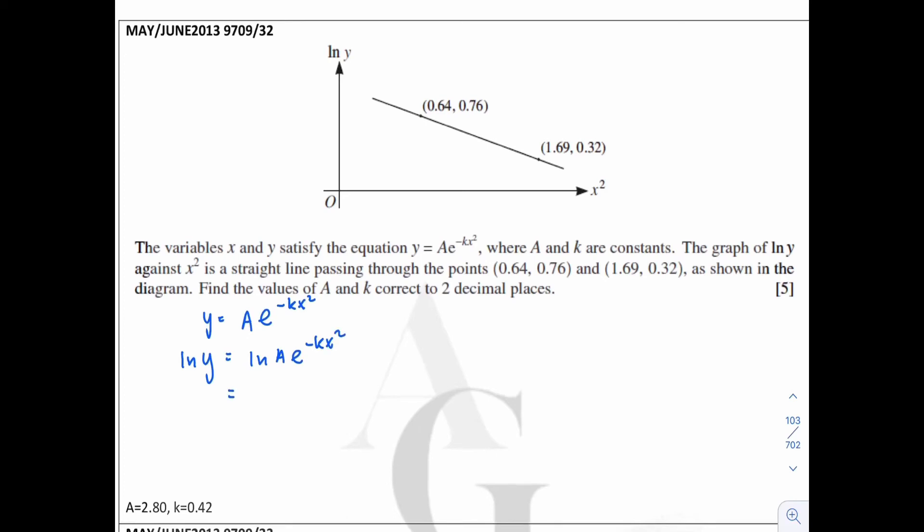And then we should separate the right-hand side into two terms. ln a plus ln e power negative kx squared. And for the power, can bring down. So it becomes minus kx squared ln e. And ln e is actually equal to 1. So now your equation becomes ln y equals negative kx squared plus ln a. Alright. So when we compare with y equals mx plus c, your gradient should be equal to negative k, and for the intercept it should be equal to ln a.